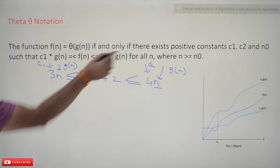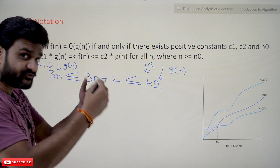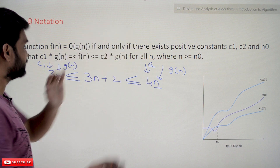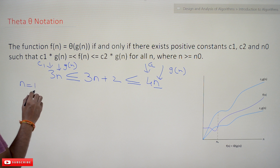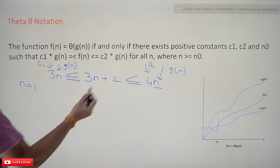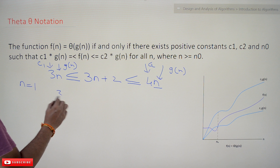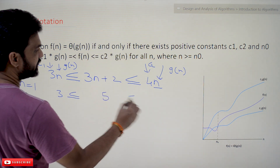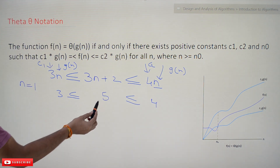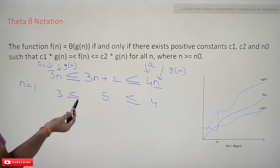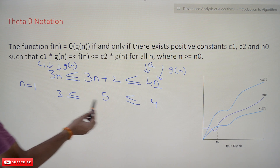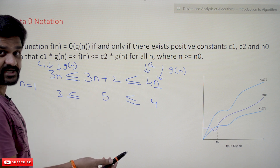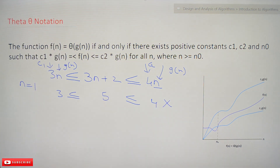Now we will try to get the value of n0 — from which value is this going to be true for all values of n? We will start with n equal to 1. If we substitute n equal to 1: f of n gives 3 plus 2 equals 5, c1·g(n) gives 3, and c2·g(n) gives 4. Is 5 greater than or equal to 3? Yes, it is true. But is 5 less than or equal to 4? No, 5 is greater than 4. So this is not going to be true for n equal to 1.